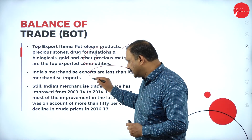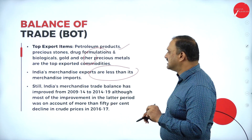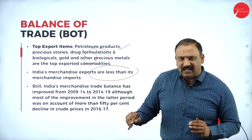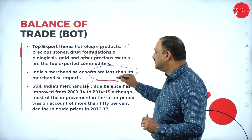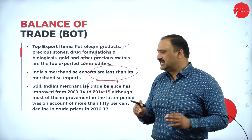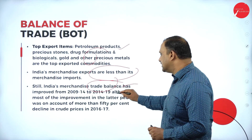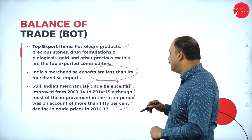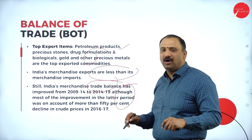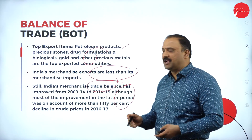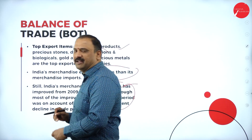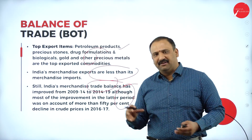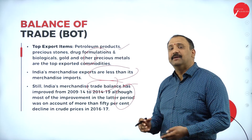India's merchandise export is less than its merchandise imports — this is where we are struggling. We have to be very careful about this factor. India's merchandise balance from 2009 to 2014 and 2014 to 2019 saw improvement in the latter period, largely on account of a roughly 50 percent decline. This is a very interesting factor for us to understand and determine how things have been going in our favor.